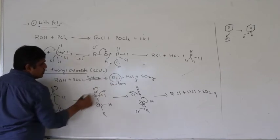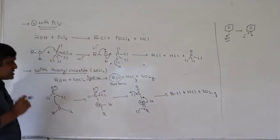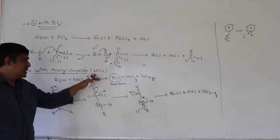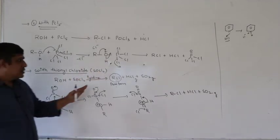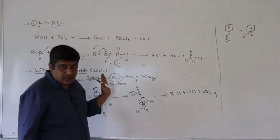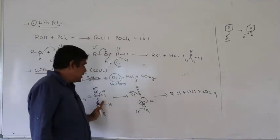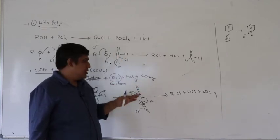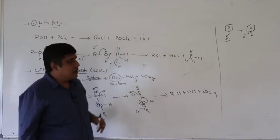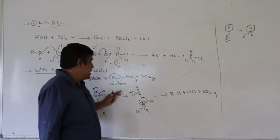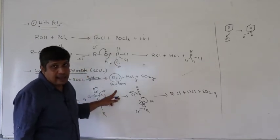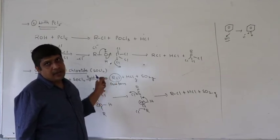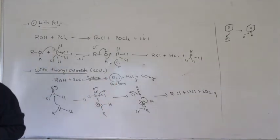So thionyl chloride is considered the best method to prepare alkyl halide because you obtain it in pure form. Which is the best reagent to prepare alkyl halide from alcohol? The answer is thionyl chloride, because the by-products SO2 and HCl are gases and can be easily removed. If you add pyridine, HCl is removed as a salt; SO2 gas can be separated easily by heating, leaving behind pure alkyl halide.